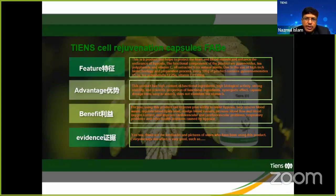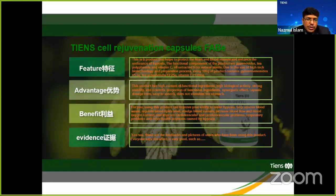The glyphosate acid proanthocyanidins are 5.3 grams. T polyphenols are 2.25 grams. From vitamins, Vitamin C is actually 30 milligrams — that is a huge nutritional source. This is a little bit about the cell rejuvenation capsule.